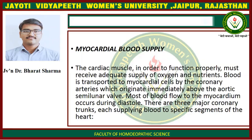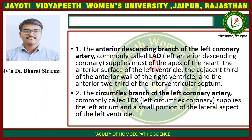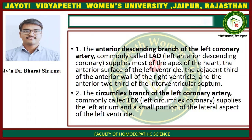There are three major coronary trunks, each supplying blood to a specific segment of the heart. The first is the anterior descending branch of the left coronary artery, commonly called LAD — left anterior descending coronary artery — which supplies most of the apex of the heart, the anterior surface of the left ventricle, the adjacent third of the anterior wall of the right ventricle, and the anterior two-thirds of the interventricular septum. The second is the circumflex branch of the left coronary artery, commonly called LCX, which supplies the left atrium and a small portion of the lateral aspect of the left ventricle.